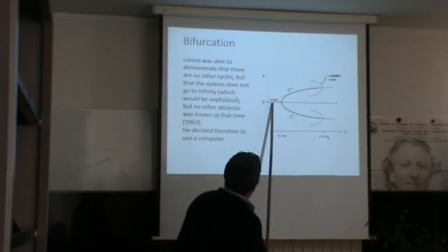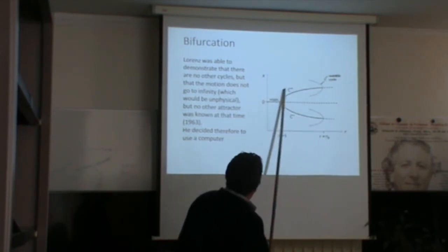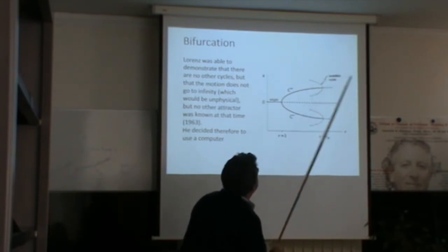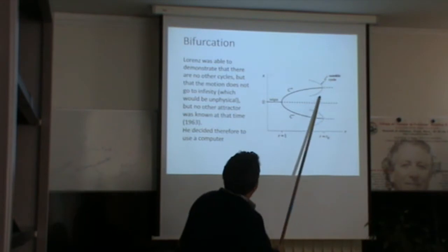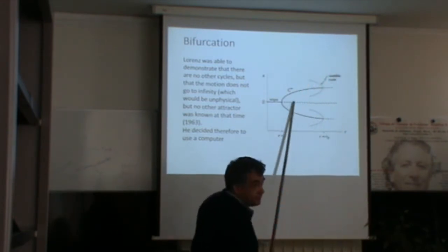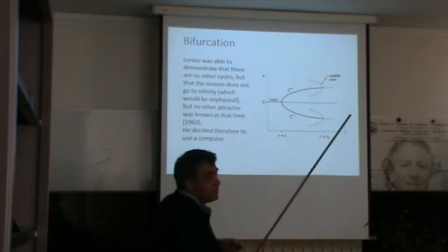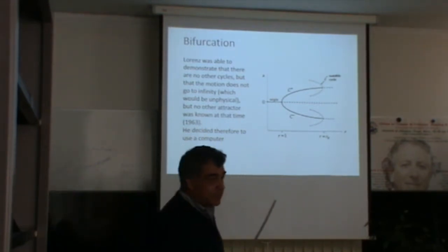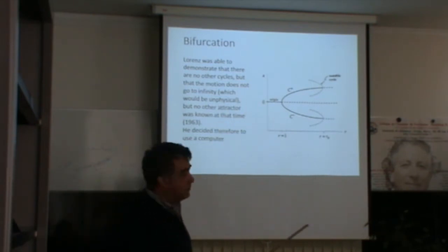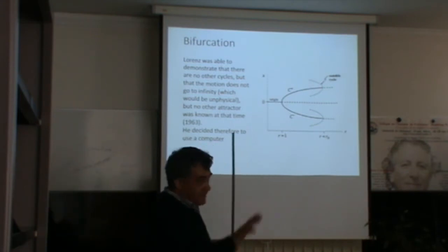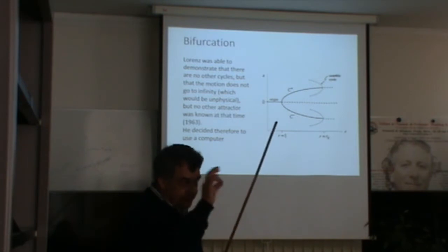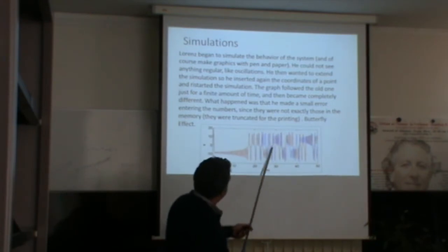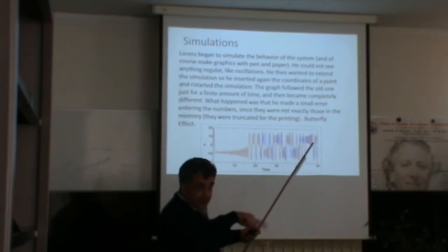Lorenz ran simulations and found behavior very similar to the chaotic water wheel. He thought it might be a periodic motion with a very long period, so he performed more simulations. But instead of putting in the exact last computed coordinates, he used values from a short time before — and he discovered that the computation starting from that point went on a completely different trajectory. He first thought the computer was not working. Then he realized that the digits printed by the printer were not exactly the numbers inside the computer — they were rounded. So there was a very small initial error that led to a completely different trajectory.